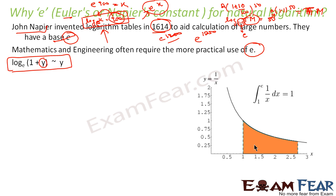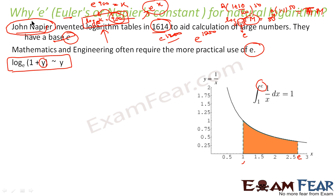Another reason e became special: if you take the graph of y = 1/x (or xy = 1), start from x = 1 and go to x = e, the area under the curve equals 1. Mathematically, the integral of 1/x dx from 1 to e equals 1. This gave e a special role in mathematics.